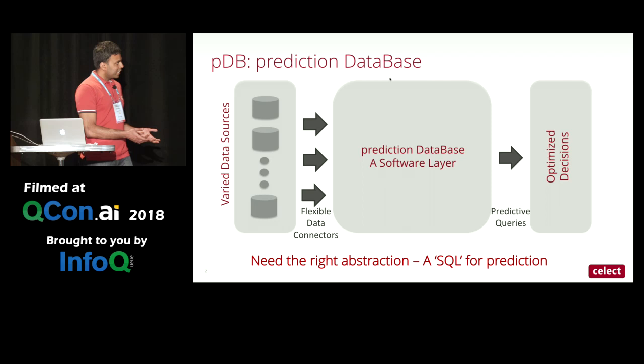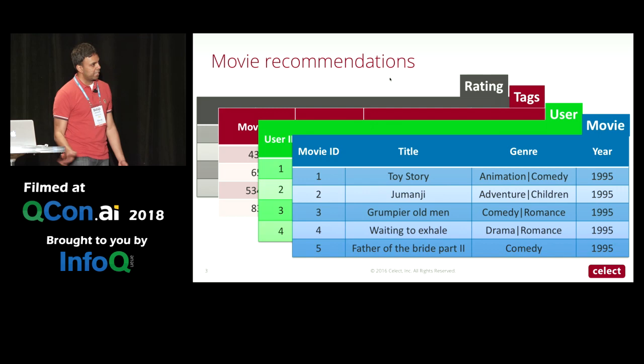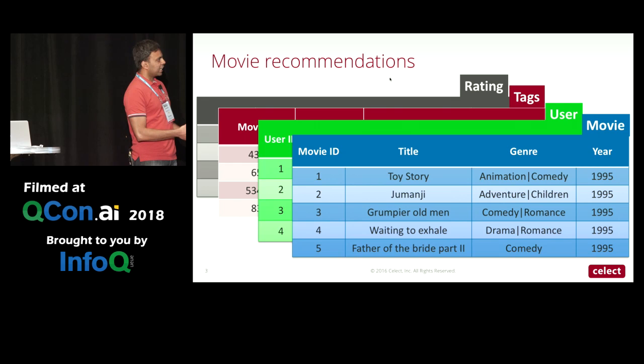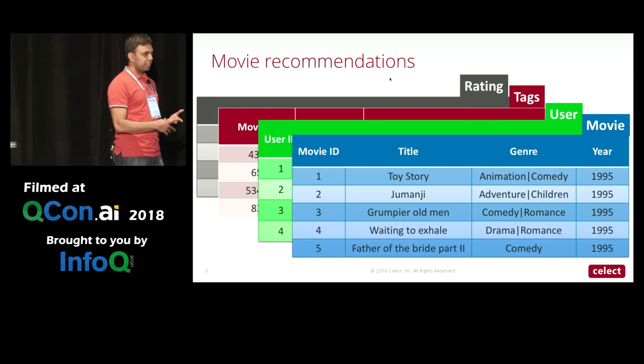To explain the abstraction itself, I'll use a simple toy problem: the popular movie recommendation problem. The way I want to visualize the data is in sheets, like an Excel file. In this case there are four sheets — movies, users, tags, and ratings — similar to the MovieLens dataset.